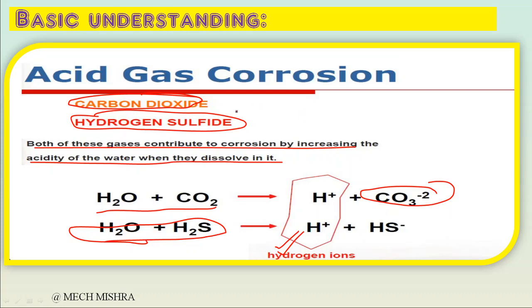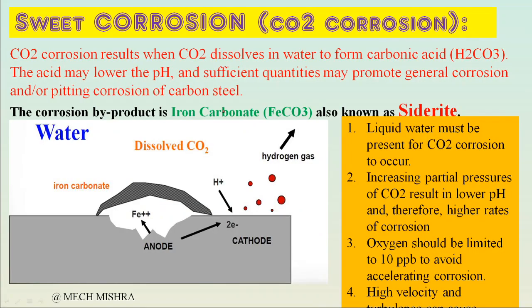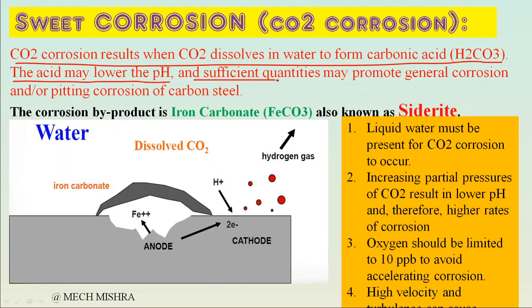Sweet corrosion is also called CO2 corrosion or carbon dioxide corrosion. CO2 corrosion results when CO2 dissolves in water to form H2CO3 — carbonic acid. This acid lowers the pH, and in sufficient quantity it can cause general corrosion or pitting corrosion of carbon steel or some alloy steels.